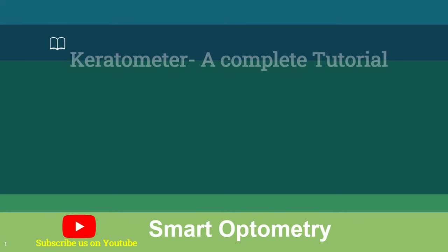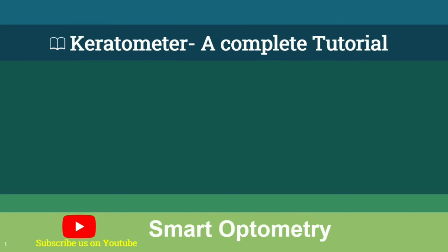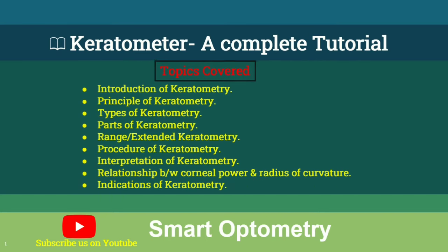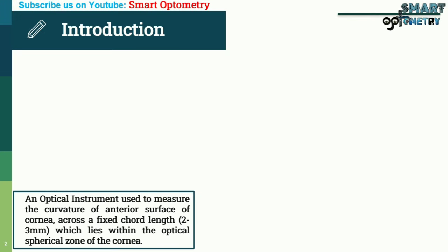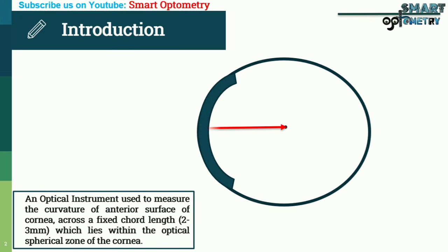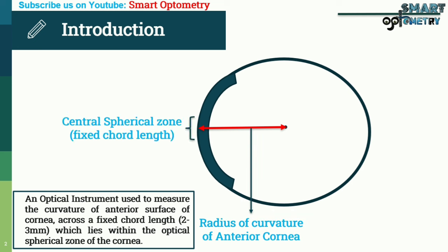Today I will discuss keratometry. A keratometer is an optical instrument used to measure the curvature of the anterior surface of the cornea across a fixed cord length of 2 to 3 mm, which lies within the optical spherical zone of the cornea.